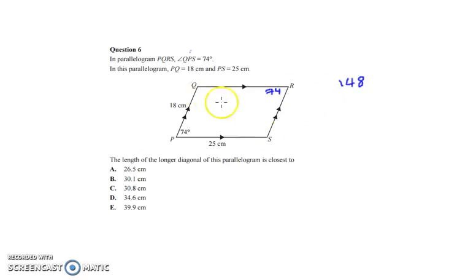We can work out what these two angles are by subtracting the 148 from 360, which equals 212. So both these angles here combine to make 212. So we can divide that by 2 to find a single angle, which is 106 degrees.